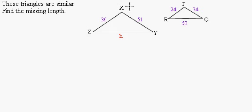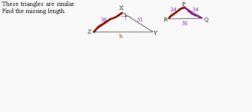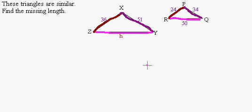So the side that was 24 has now expanded to 36, the side that was 34 has now expanded to 51, and the side that was 50 has now expanded to some side H — and that's what we want to find. One of the characteristics of similar triangles is that their sides are proportional.